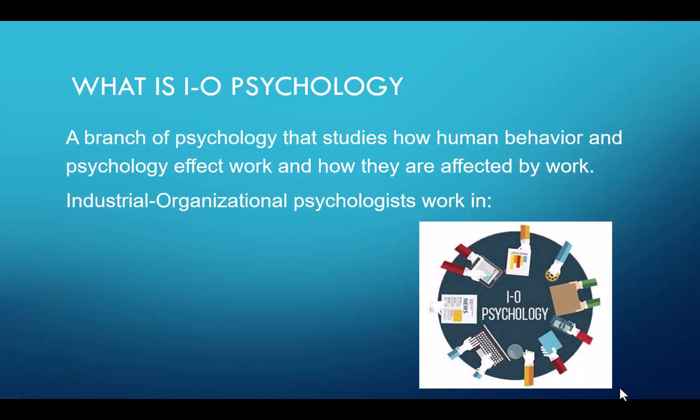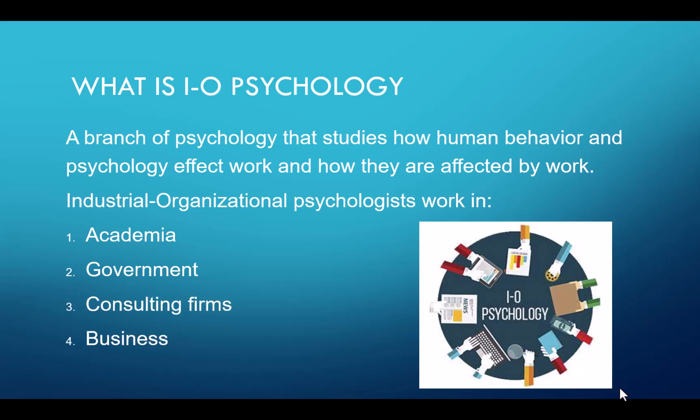So let's start talking about what IO psychology is. It's a branch of psychology that studies how human behavior and psychology affect work and how they are affected at work. Industrial and organizational psychologists work in academia — they may be teaching others about IO psychology — as well as in government, consulting firms, and businesses. They work to improve hiring processes, efficiency in the workplace, and other things we will discuss here and in another video.